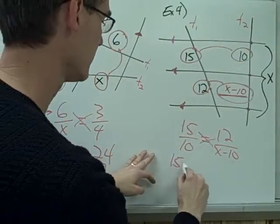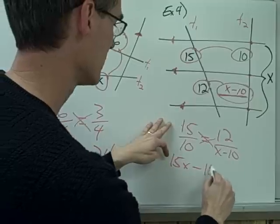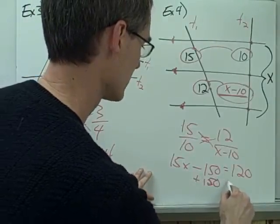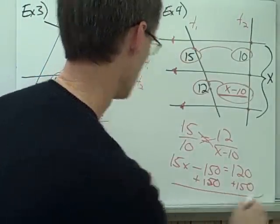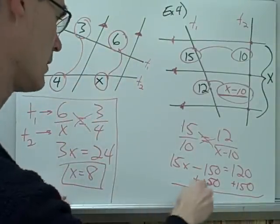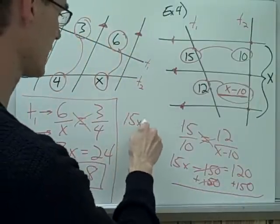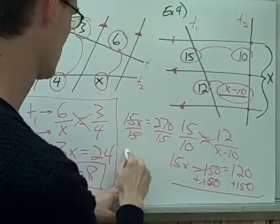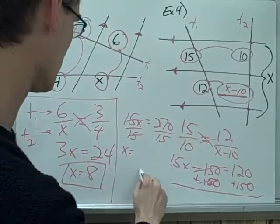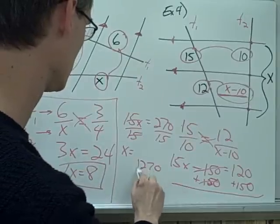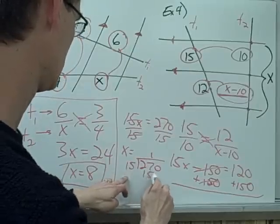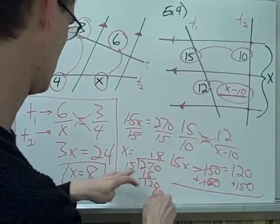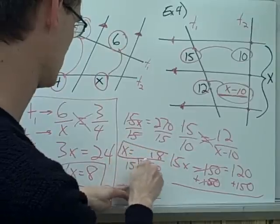Cross-multiplying gives 15(x minus 10) equals 120, which expands to 15x minus 150 equals 120. Adding 150 to both sides gives 15x equals 270. Dividing both sides by 15 gives x equals 18.